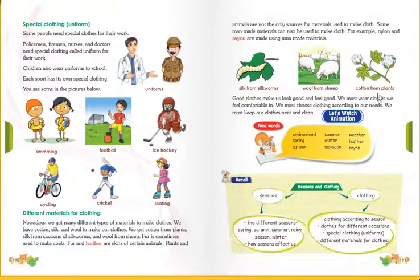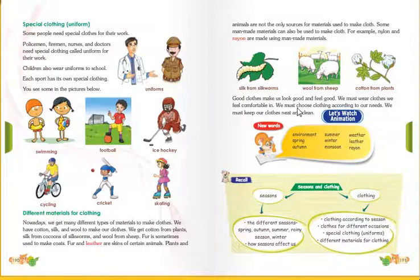Cotton comes from plants, silk from silkworms, and wool from sheep. Good clothes make us look good and feel good. We must wear clothes we feel comfortable in. We must choose clothing according to our need. We must keep our clothes neat and clean.